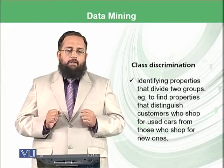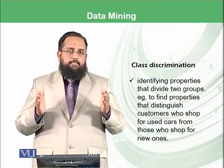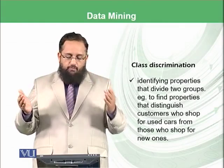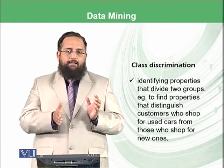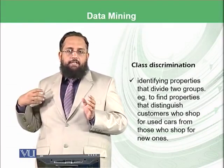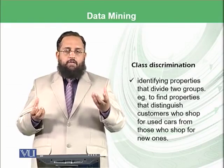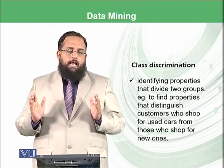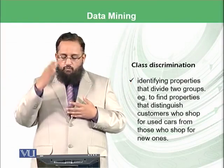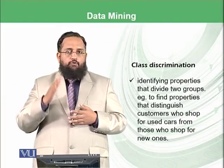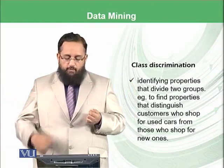The other form is class discrimination, which involves identifying properties that divide two groups. For example, finding properties that distinguish customers who shop for used cars from those who shop for new ones. We have two classes and want to discriminate: based on what characteristics a person has, they are placed in one class or the other. You learn from the data, and whenever a new customer comes in with particular characteristics, you can predict whether they will shop for a used car or a new one, using patterns identified from hundreds or thousands of historical records.